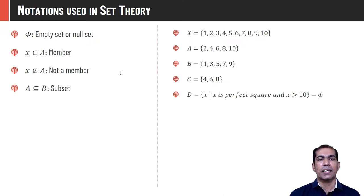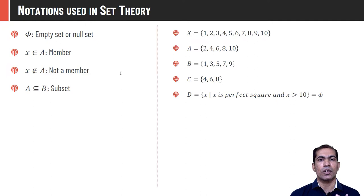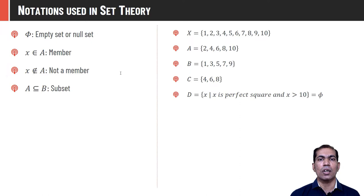A ⊆ B means if all elements of A are present in B, then A is a subset of B. In our example, all elements of C are also in A, so C is a subset of A. All sets derived from the universal set are always subsets of the universal set. Also, all sets are always subsets of themselves, and the null set is a subset of all sets.